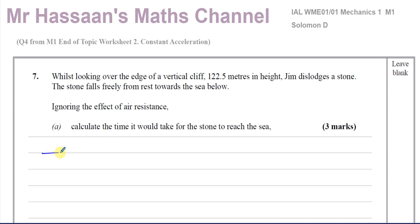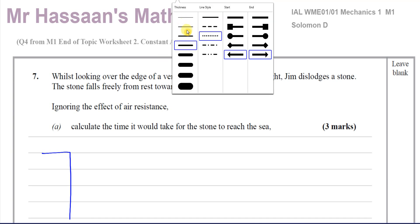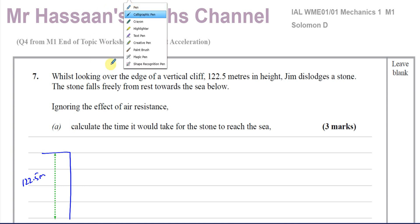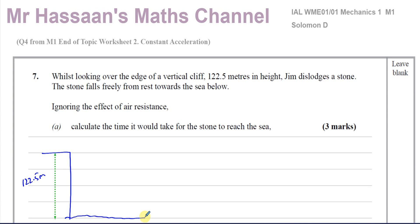Imagine he's at the top of a cliff here, and the cliff is 122.5 meters high above the sea. There's a stone that he dislodges, and when he dislodges the stone it's going to fall down towards the sea. Its initial speed is going to be zero meters per second because it's been dislodged — he's not throwing it down, it just dislodges and starts to fall. So it starts from zero meters per second.